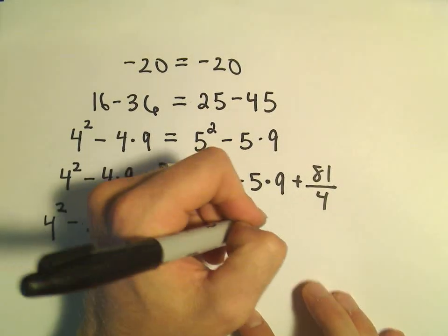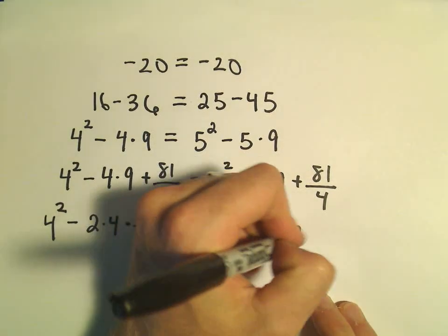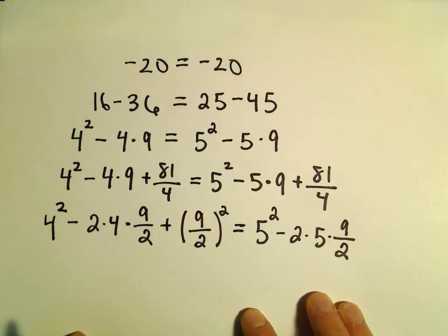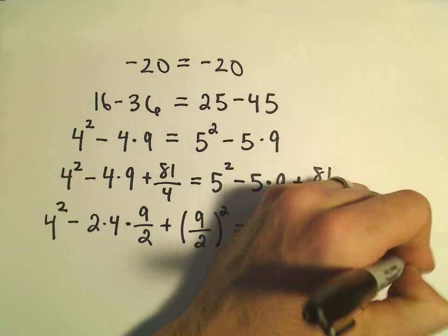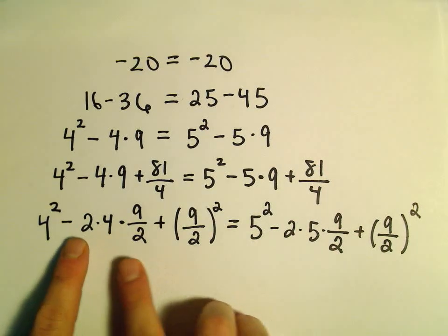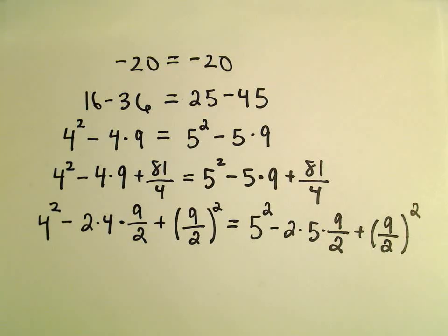On the right side, I'm going to do the same thing. We've got 5 squared. I'm going to write this as 2 times 5 times 9 over 2, plus 9 over 2 squared. The 2 and the 9 halves cancel, giving us back our 9. The reason we do this is this now factors nicely.